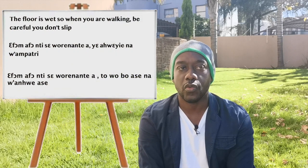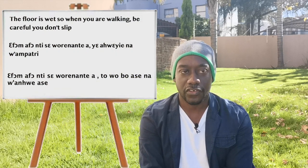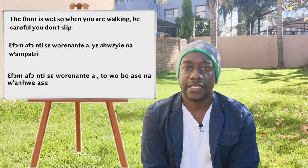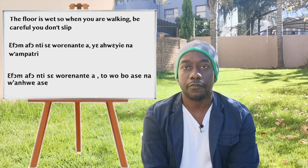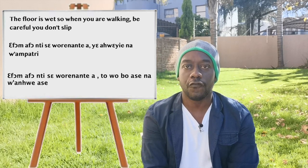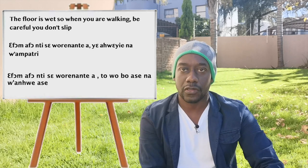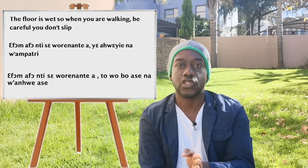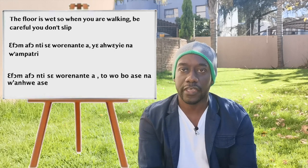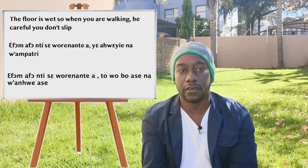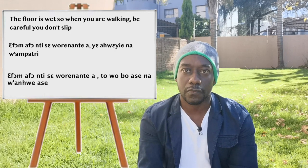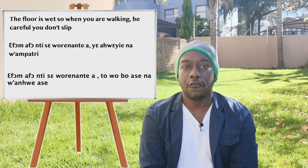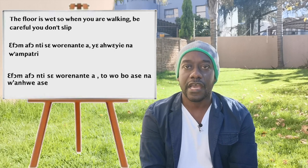The first person who wanted something translated was Alpha Ray. He wanted to know how to say 'the floor is wet, so when you're walking be careful you don't slip.' In Chi that is: 'a fom afo inti sewu nantia ye asheye nawam petri.' A fom afo means the ground/floor is wet, nantia means when you're walking, ye asheye means be careful, and nawam petri means don't slip or don't stumble.